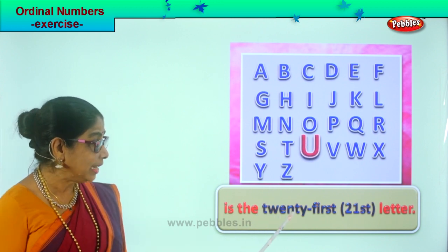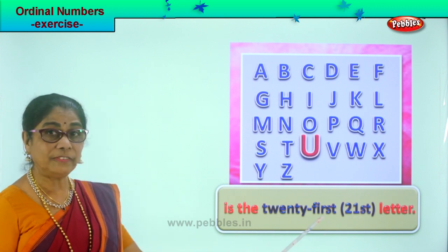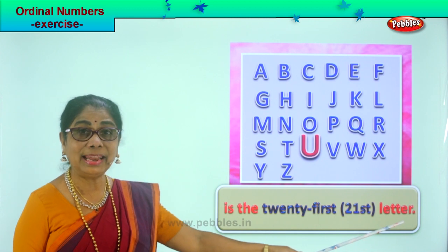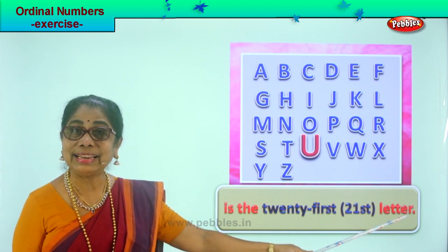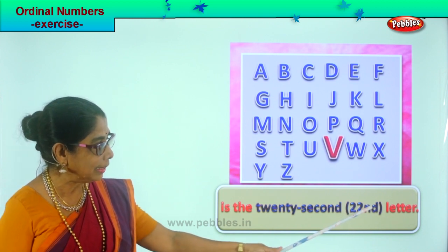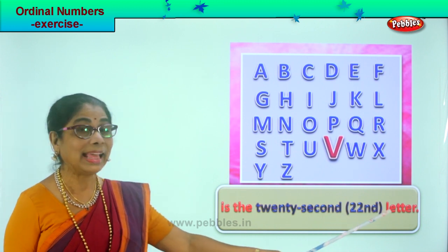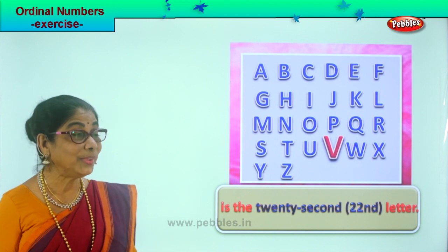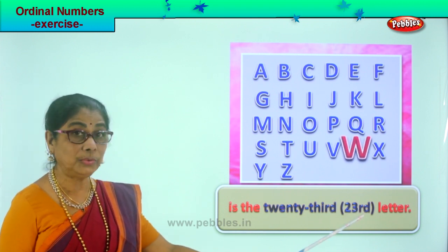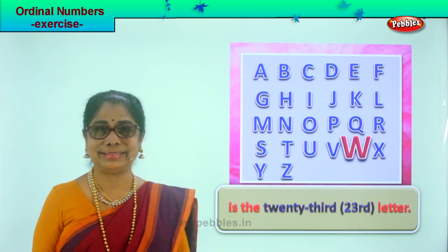U is the 21st letter. See how you write 21st — write 21 and then ST. U is the 21st letter. Next is letter V. V is the 22nd letter — 22 and ND. V is the 22nd letter. After V comes W. W is the 23rd letter — write 23 and RD.